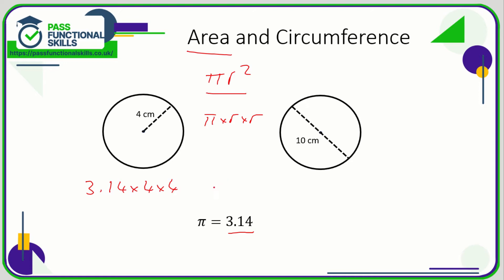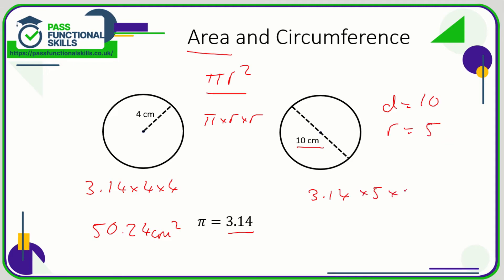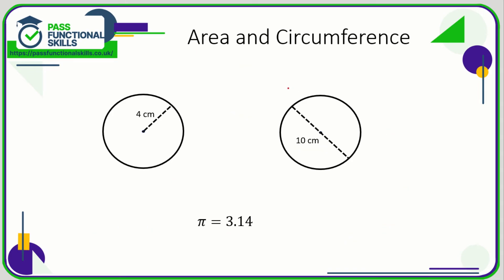This circle has a radius of four, so the area is 3.14 × 4 × 4, which comes to 50.24 square centimetres. In the next example, it's again π r², so 3.14 times the radius times the radius. But the 10 centimetres given is the diameter, so the radius is half of that, which is five. The calculation is 3.14 × 5 × 5, which comes to 78.5 square centimetres.